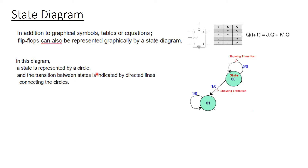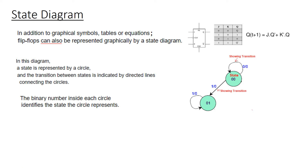In this diagram, a state is represented by a circle and the transition between states is indicated by directed lines connecting the circles. The binary number inside the circle identifies the state. The numbers shown on the lines represent X and Y — X is the input signal and Y is the output.